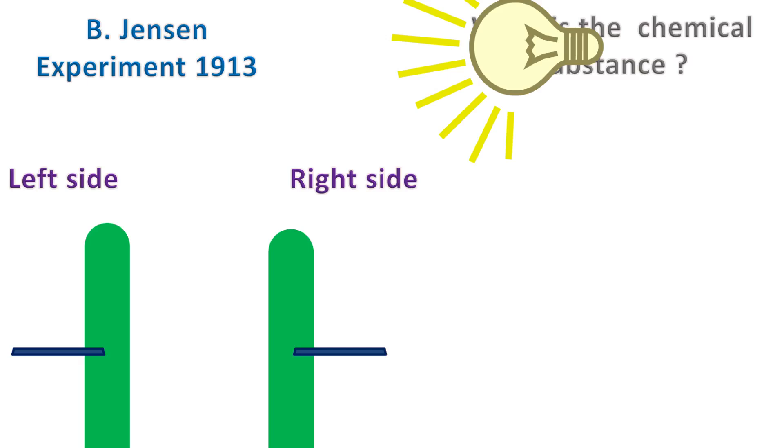He found that when the impermeable barrier was placed on the right side, the tip shows bending towards the light. And when the impermeable barrier was placed on the left side, no bending was seen.